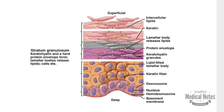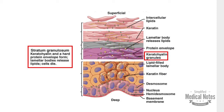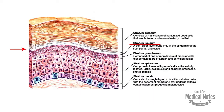The next layer is the stratum granulosum. This layer derives its name from the granular cells, which consist of keratohyaline granules that produce profilaggrin. It also contains lamellar granules that, when secreted, produce a waxy lipid substance which forms a barrier to prevent water loss.